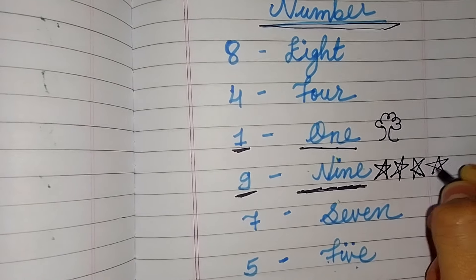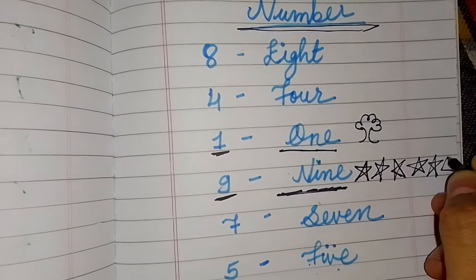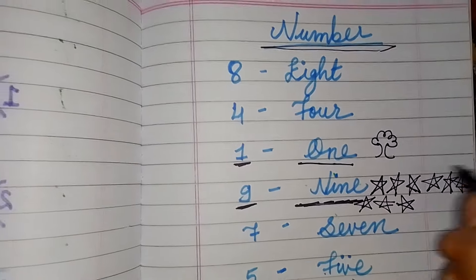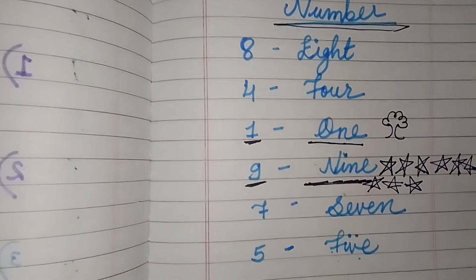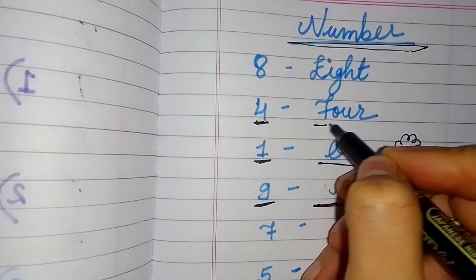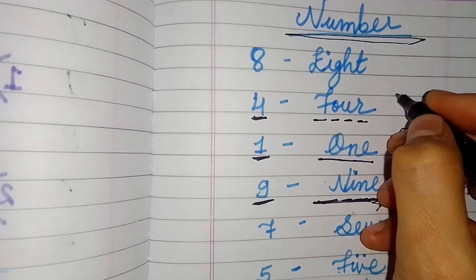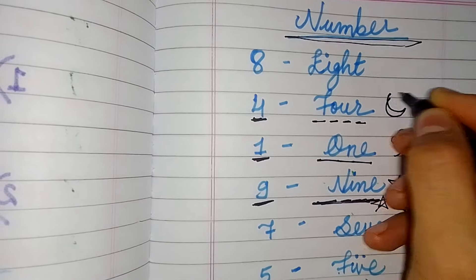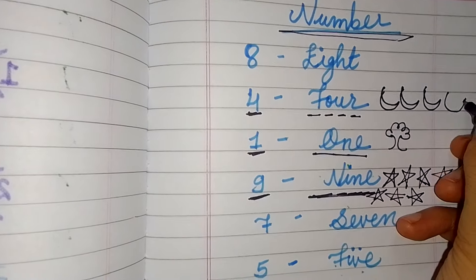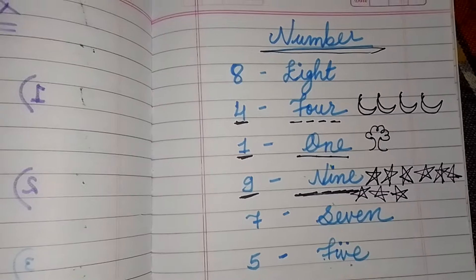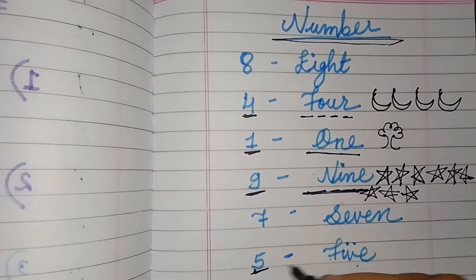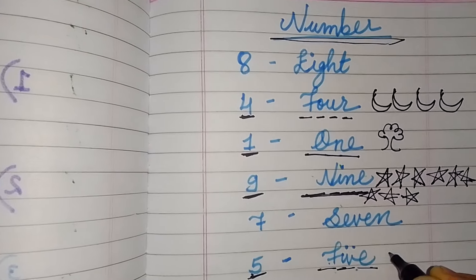Where is number four? Where is number four? Here is number four — F-O-U-R — four. Four moons: one, two, three, four. Where is number five? Here is number five — F-I-V-E — five.